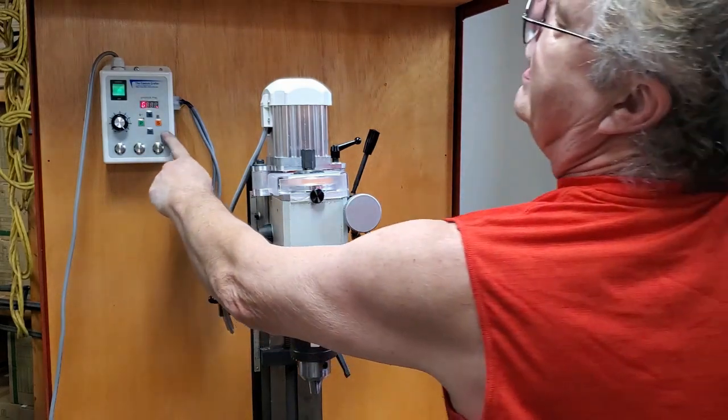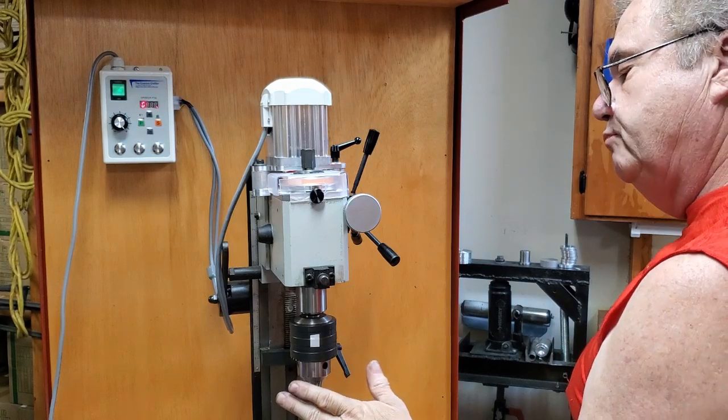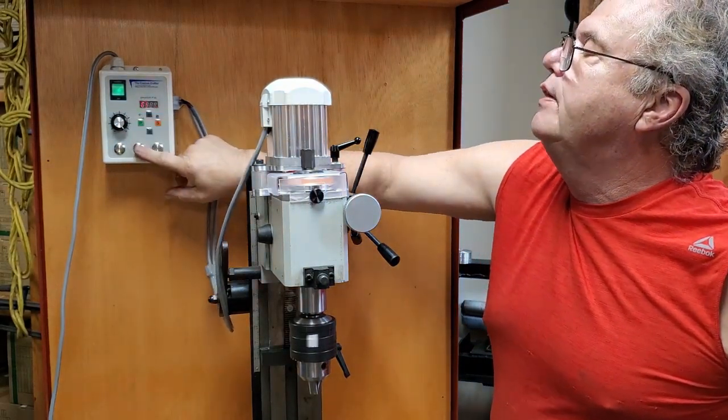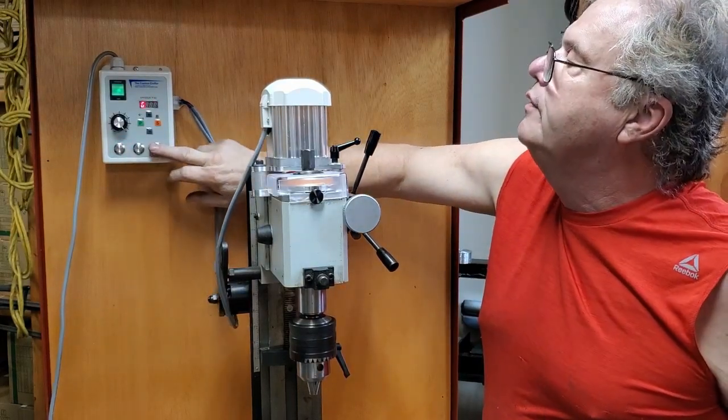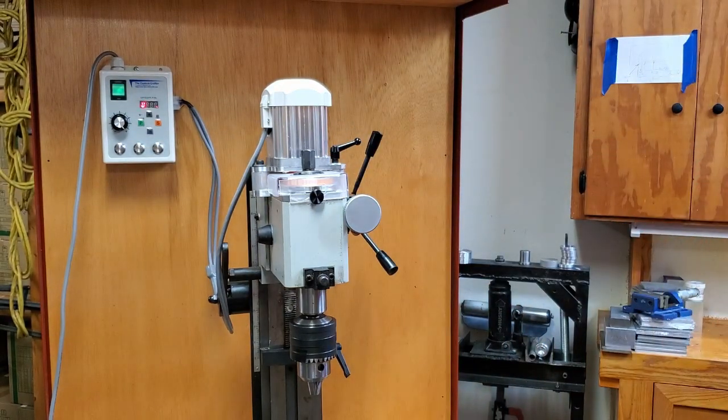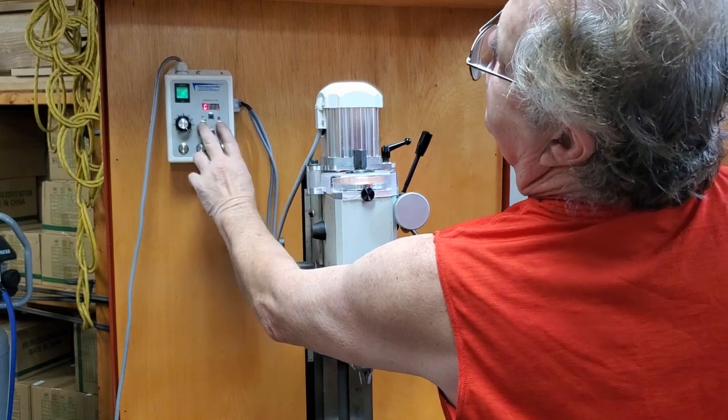This is our base unit controller with a 750 motor. I've already adjusted the brake and the soft start. It's at max 4500, stop, start, stop, reverse direction, start, stop. Notice how fast it is. I'll show you how to adjust the brake.